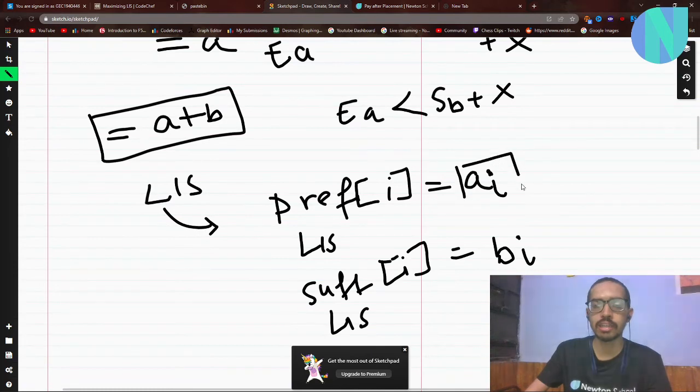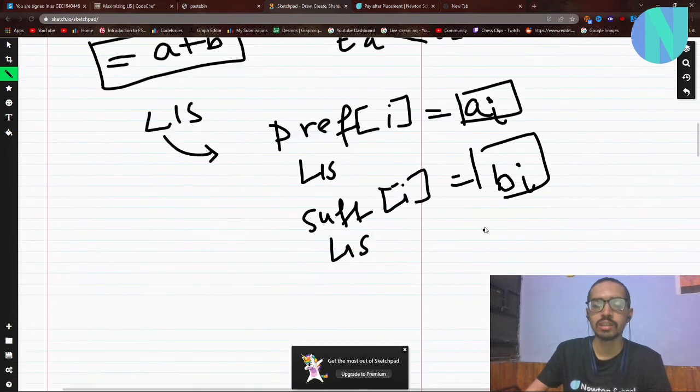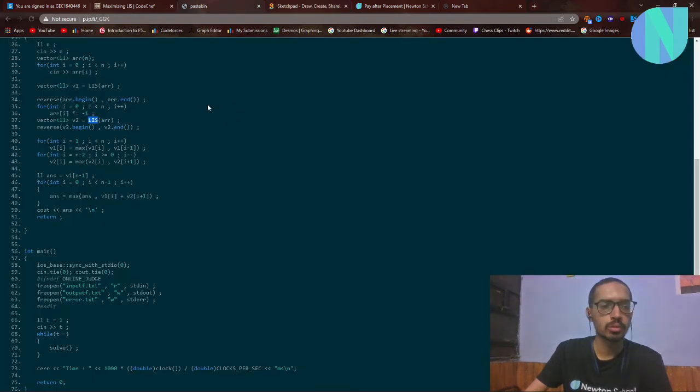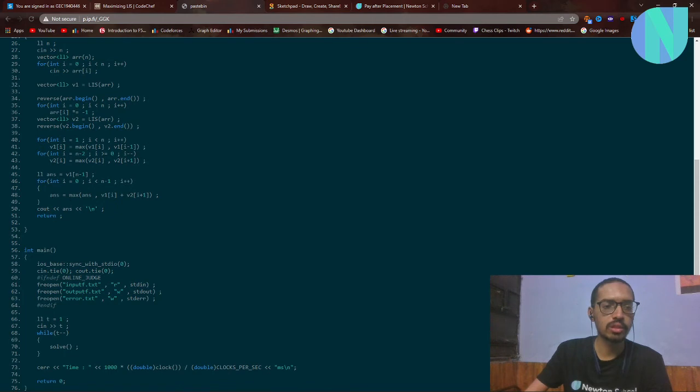Now we have array elements a of i and b of i. Then we can iterate over every element and calculate max of ai plus bi. This is basically the answer after iterating over every i. So if you see here, v1 is basically my a for every index, v2 is my b for every index. Then they went over the entire array and calculated v1[i] plus v2[i]. This is the answer, and they just printed it.